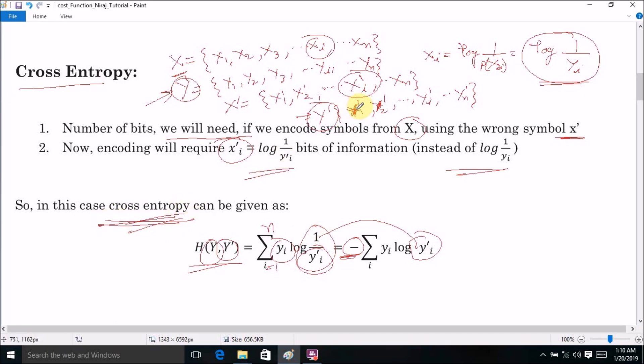The major thing that we can observe in the cross entropy compared to the entropy is that cross entropy is always larger than entropy, as encoding symbol according to the wrong distribution Y' will always have some more number of bits or may use some extra bits. There may be some cases when Y and Y' may be equal, in that case the entropy and cross entropy will be equal, but in other cases cross entropy will always be greater than entropy.